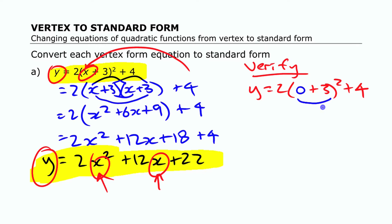So this is three and then I have to square the three. So I have nine and nine times two is 18 and 18 plus four is 22. All right.